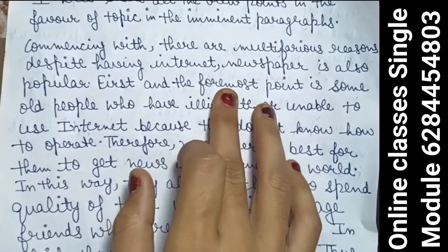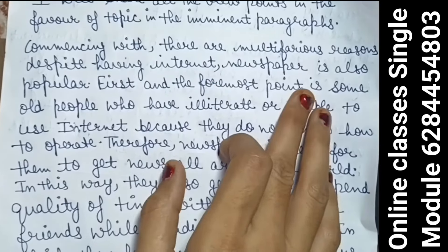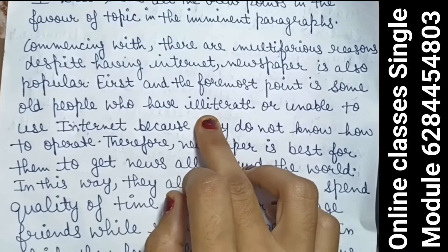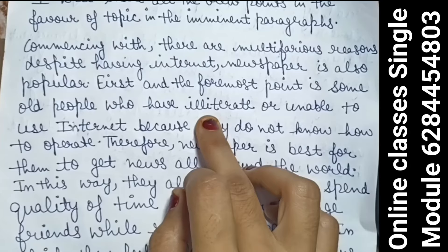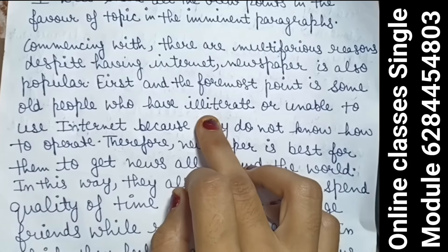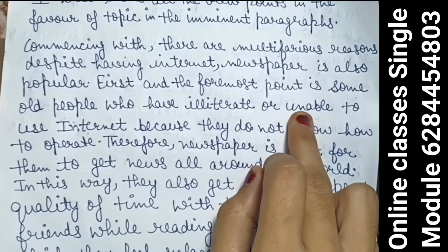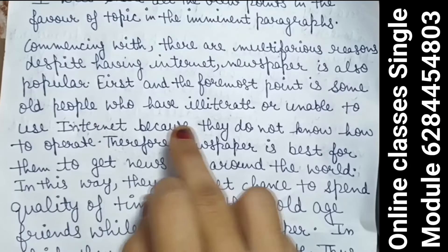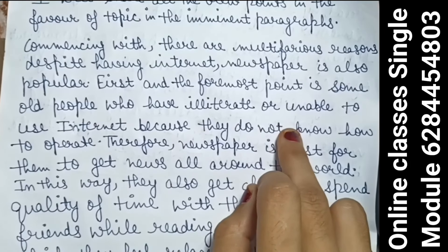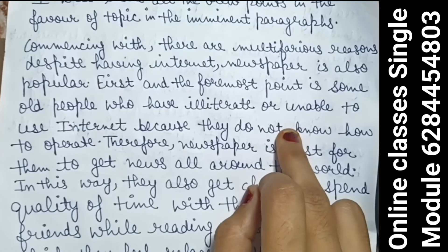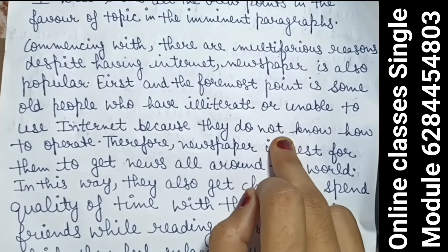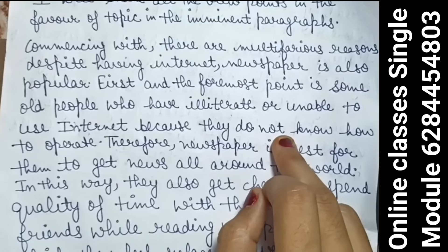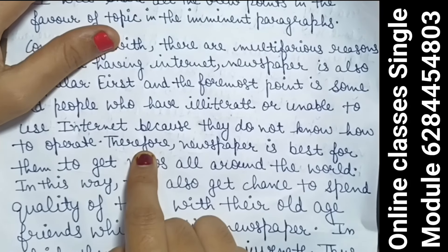The first and foremost point is: some people who are illiterate or who do not know about technology — people who cannot use the internet, or those who don't know how to operate or use mobile phones. Therefore, newspapers remain essential for them.